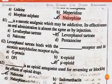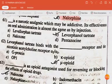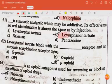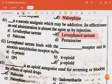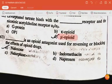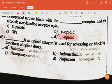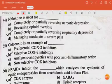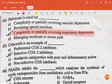Dash is a narcotic analgesic which may be addictive; its effectiveness on oral administration is almost the same as by injection — the answer is levorphanol tartrate. Levorphanol tartrate binds with the dash receptor and the nicotinic acetylcholine receptor — the answer is mu opioid. Dash is an opioid antagonist used for reversing or blocking the effects of opioid drugs — the answer is naloxone. Naloxone is used for completely or partially reversing respiratory depression.